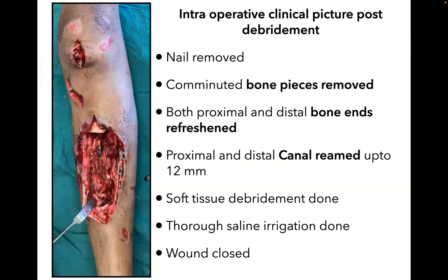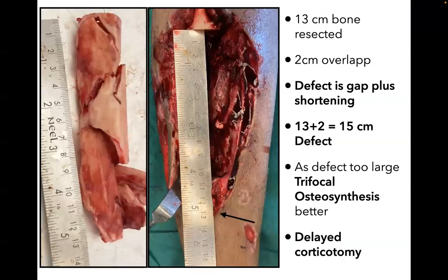This is the intraoperative clinical picture post-debridement: nail removed, comminuted bone pieces removed, and bone ends refreshed. Both proximal and distal bone ends are transverse. Proximal and distal canals were reamed up to 12 mm, soft tissue debridement done, thorough saline wash, and wound closed in layers. Around 13 cm of bone was resected plus 2 cm of shortening, giving a total bone defect of approximately 15 cm. As the defect is large, trifocal osteosynthesis is preferred, and given the post-intramedullary infection, delayed corticotomy is used.